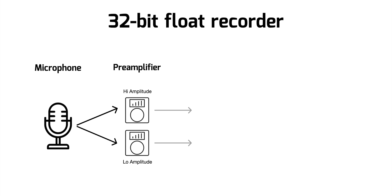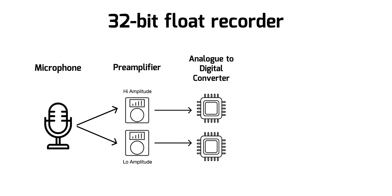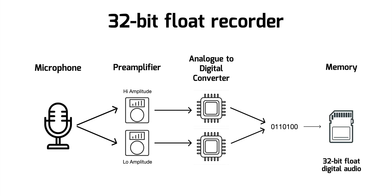After the preamplifiers, each sends its audio onto an analog to digital converter. So if there are two preamplifiers, there should be two analog to digital converters, one for each preamplifier. That takes the audio in analog form and converts it to digital — zeros and ones. Then the output of the converters is recombined into a single 32-bit float stream of ones and zeros, and that stream is recorded to a file, usually a WAV file in 32-bit float format.